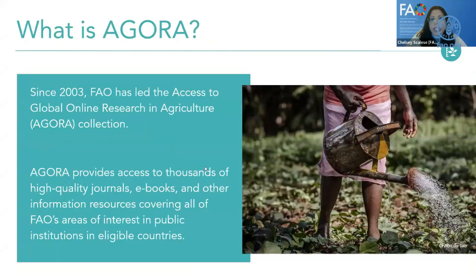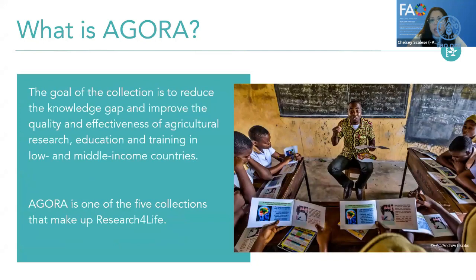So with that, we can continue and I'm going to highlight some information about Agora. FAO has led the Access to Global Online Research in Agriculture, also known as Agora, collection since 2003. Agora provides access to thousands of high-quality journals, e-books, and other information resources covering all of FAO's areas of interest in public institutions in eligible countries throughout the world. The goal of the collection is to reduce the knowledge gap and improve the quality and effectiveness of agricultural research, education, and training in low- and middle-income countries.